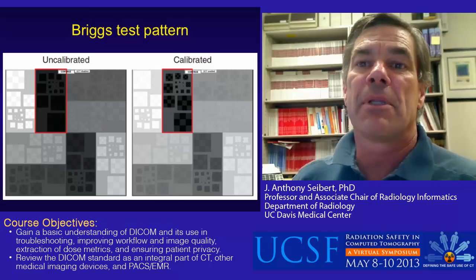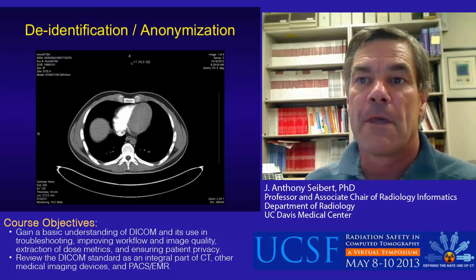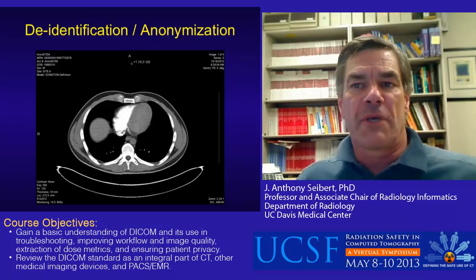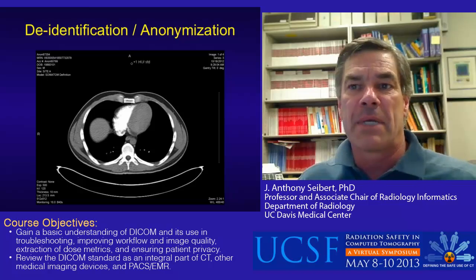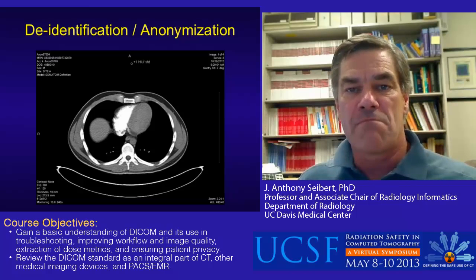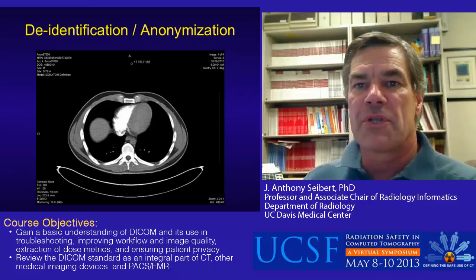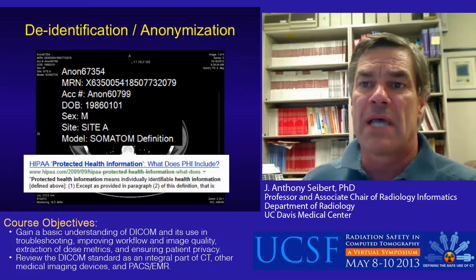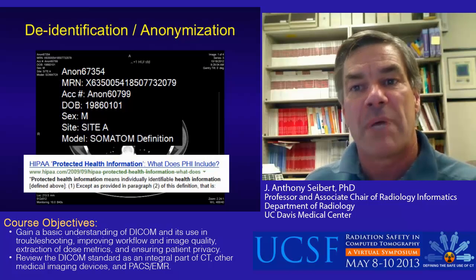An example of an anonymized study is illustrated by an enlarged view of the overlay content on the CT scan study. What content must be changed? This is described under the rules of HIPAA, listing 19 separate fields that are often contained within the DICOM metadata, including patient name, accession number, medical record number, and date of birth, among others. This is a non-trivial exercise, as often there is PHI that is not readily accessible by standard tools.